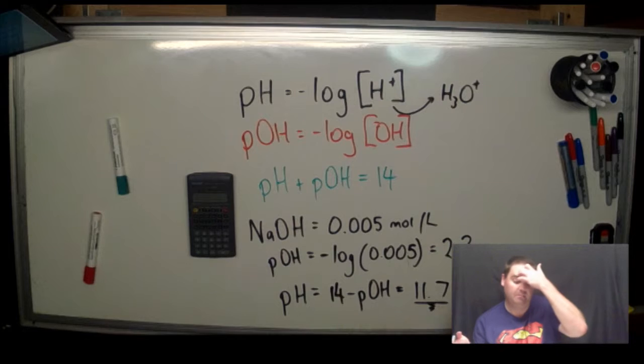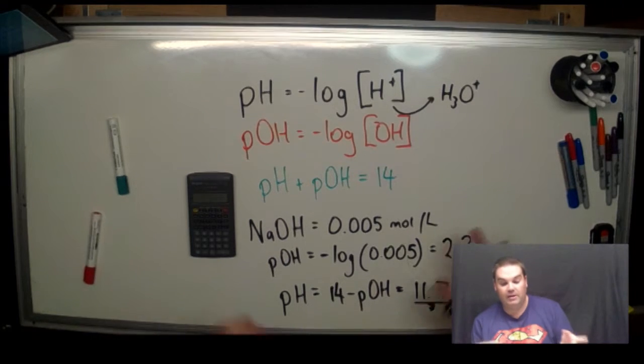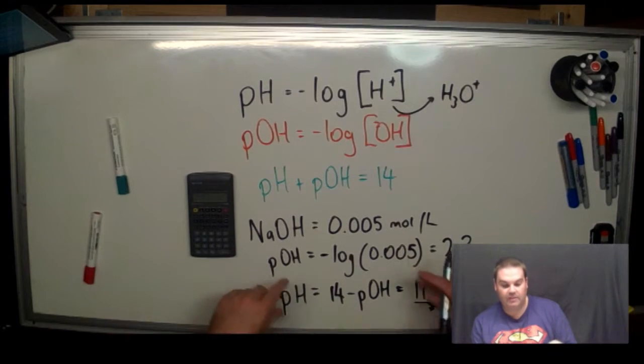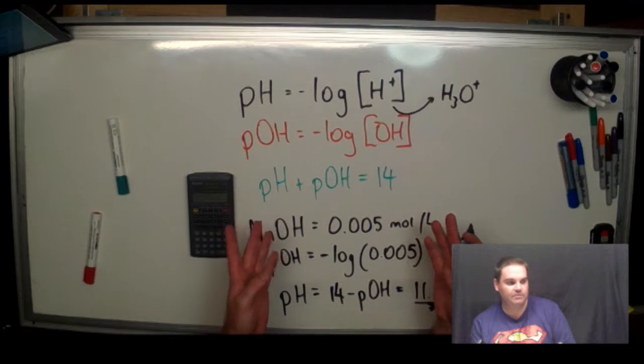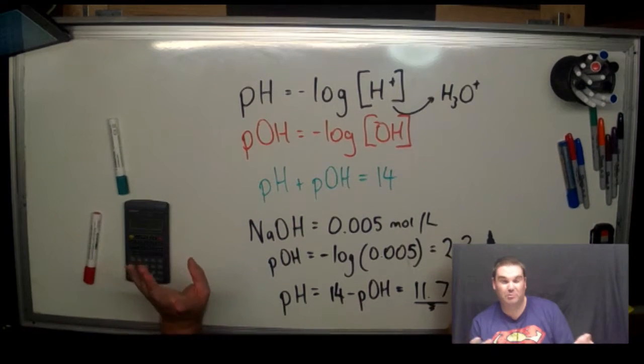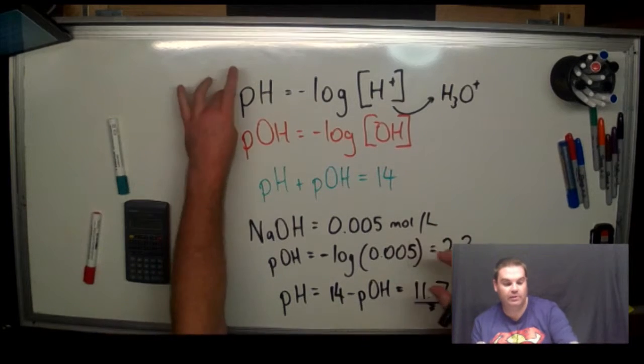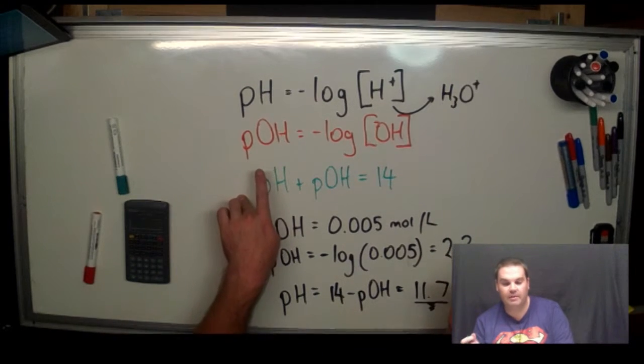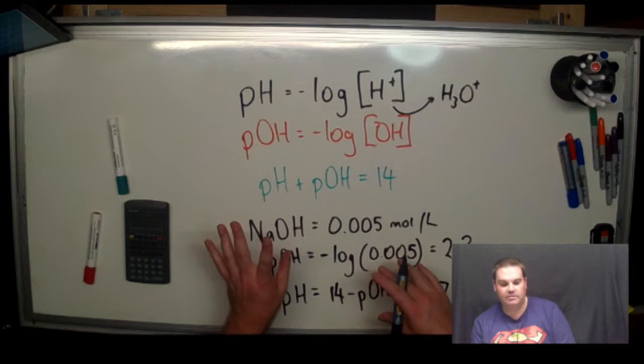So if you've got a base, you can also calculate the pH, and you can also go backwards from that, calculate the concentration of hydroxide ions as well. It's pretty straightforward. Just practice it, learn these three equations, remember them, and you can do any sort of calculations with it.